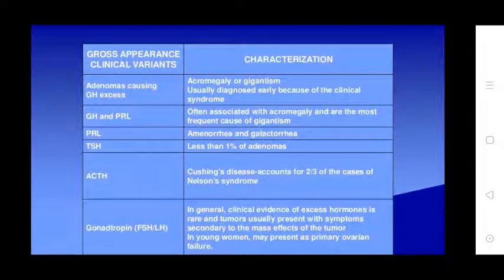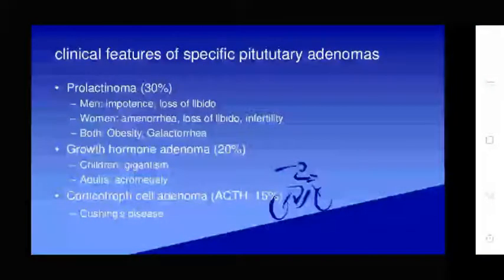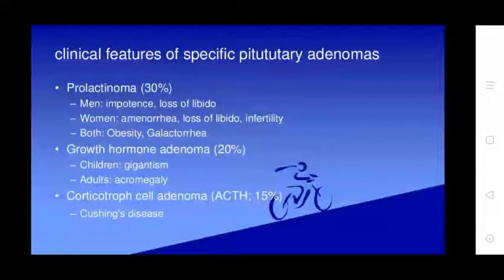Gonadotroph adenomas rarely cause clinical evidence of excess hormone and usually present with symptoms secondary to mass effect. In young women they may present as primary ovarian failure. Specific pituitary adenomas: lactinomas (30%) cause loss of libido in men and infertility, loss of libido, and galactorrhea in women. Growth hormone adenomas cause gigantism in children and acromegaly in adults. Corticotroph adenomas (ACTH) account for 15% and cause Cushing's disease.